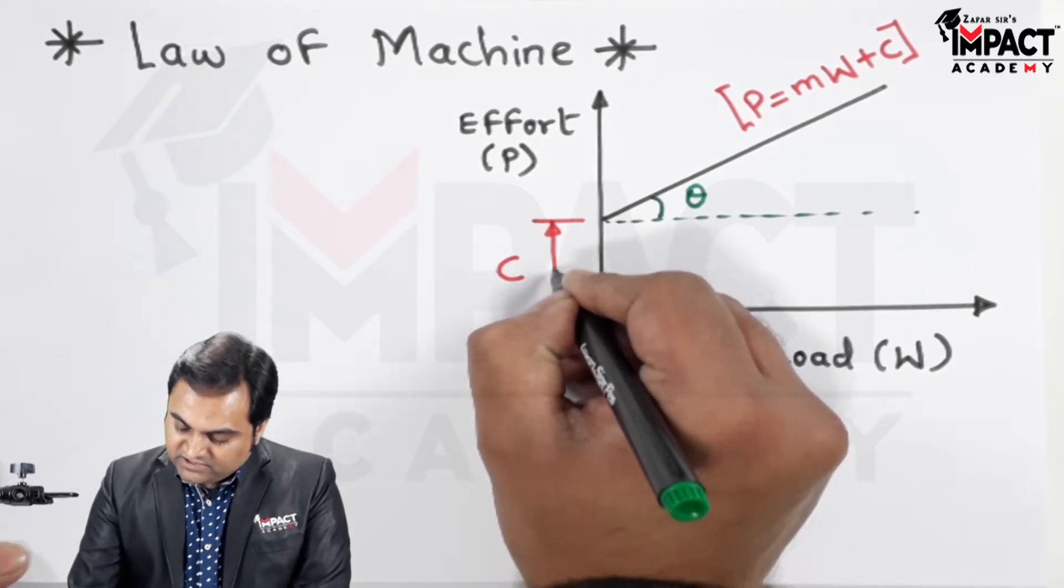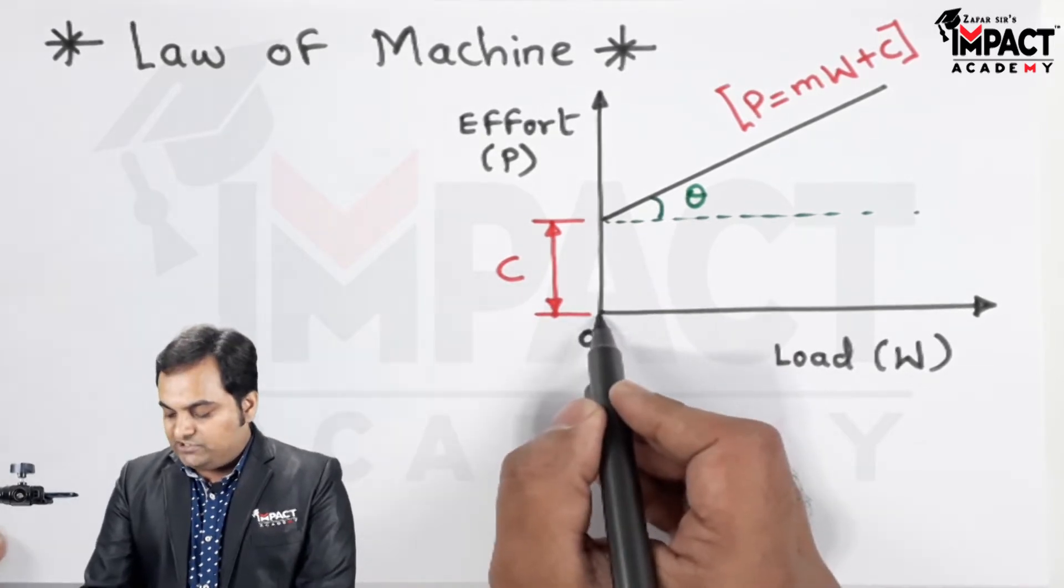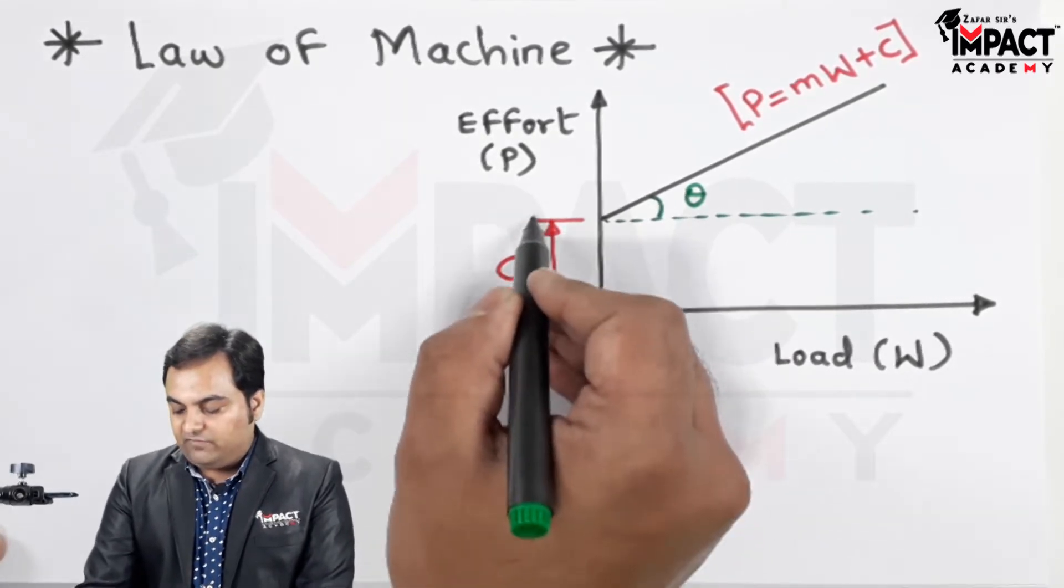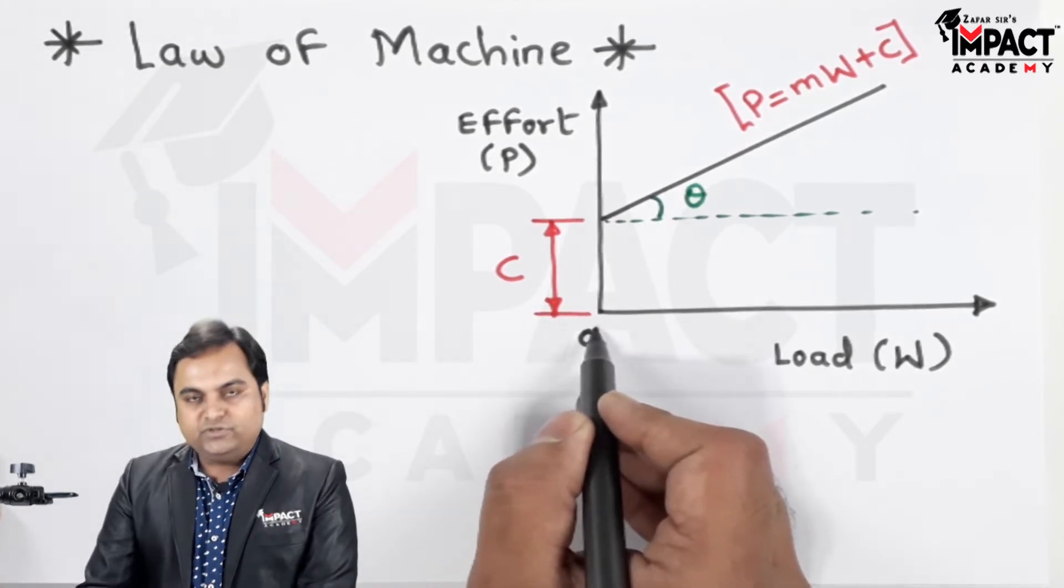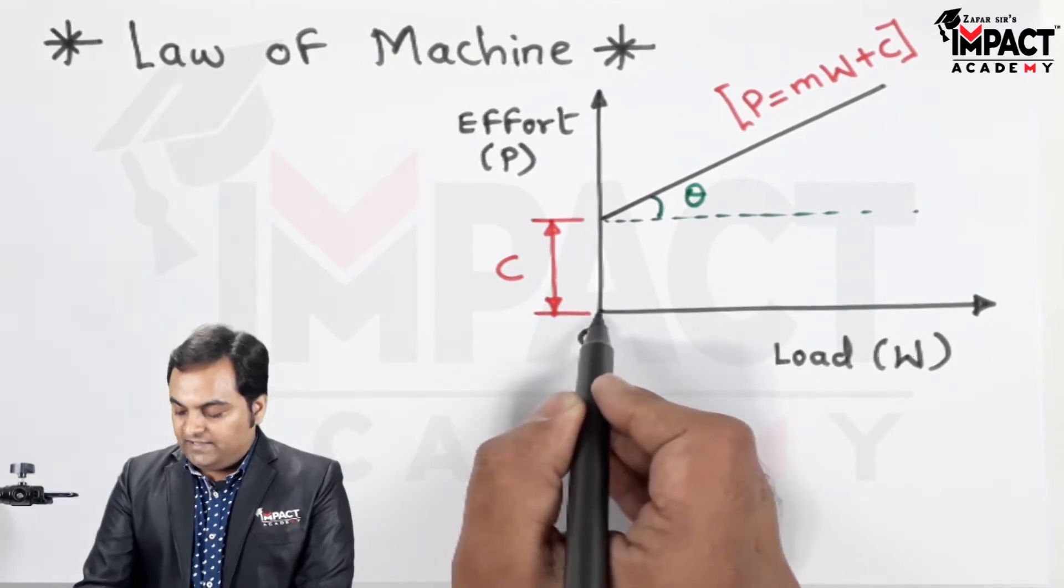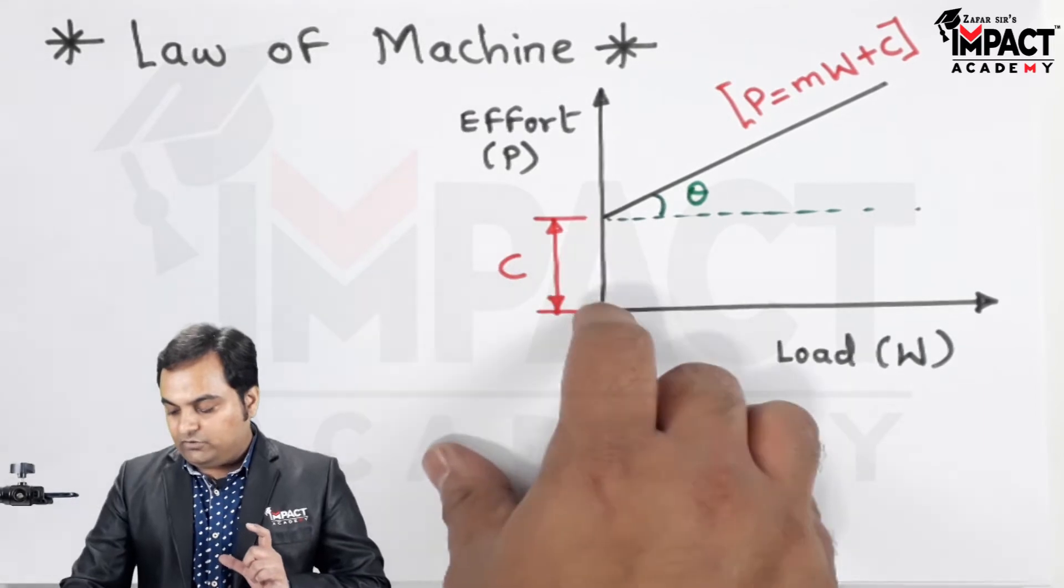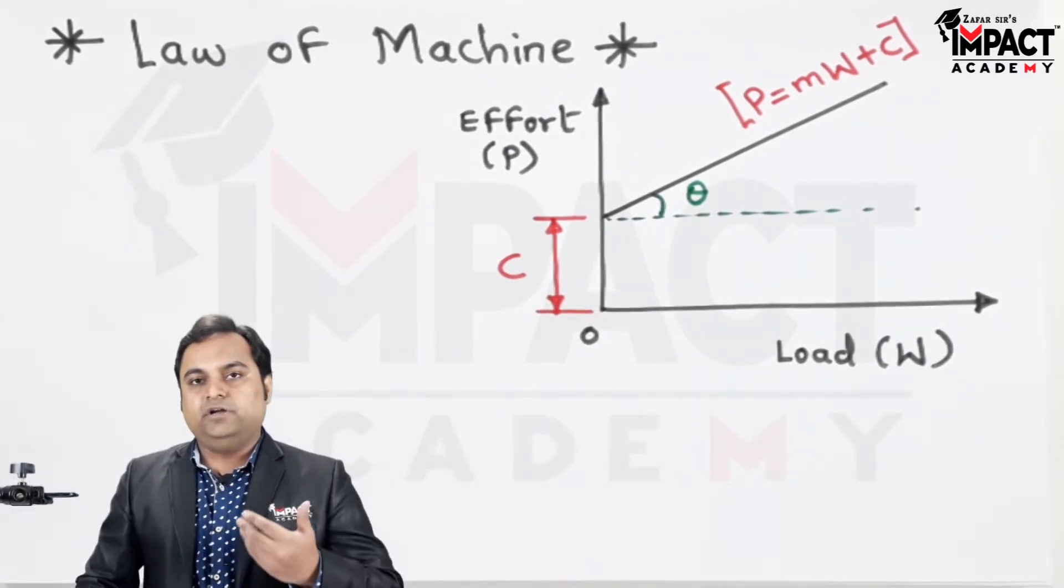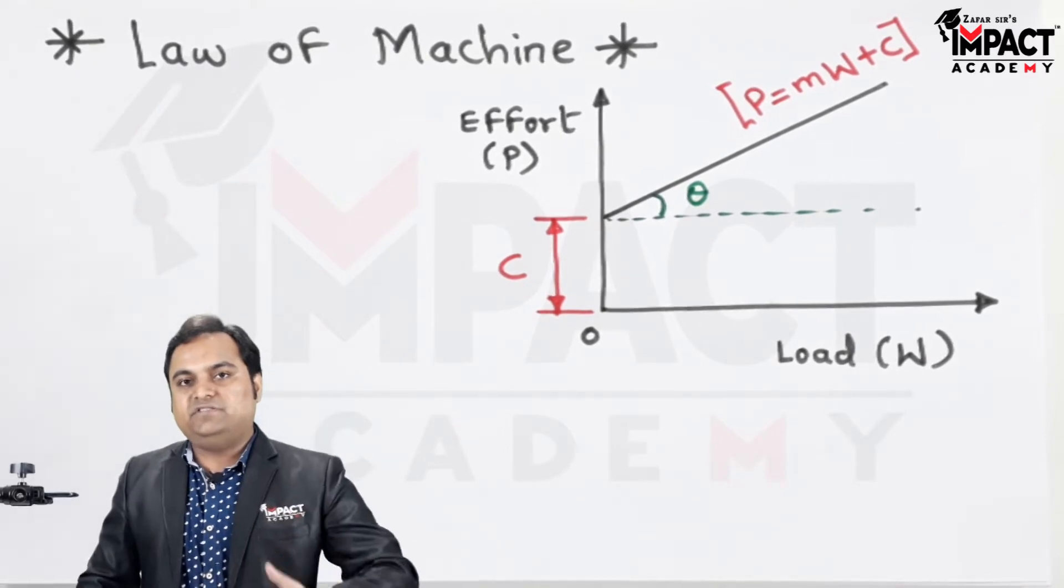But we can see that when the load is zero, there is some amount of effort which is required, because the x value is zero here but y is having a value which is C. So even though the load value is zero, there is some amount of effort present. This effort, or the height C which shows the y-intercept, is the effort which is lost in overcoming the friction. That is, the load won't be lifted suddenly or at an instant.